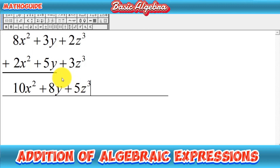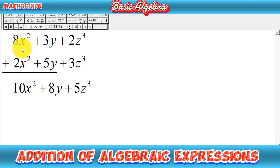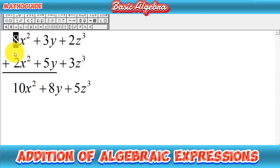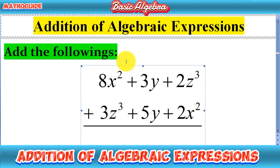First, write the expressions vertically if you want to use the vertical method. Then combine like terms in one column — that's how you can add them easily, because they have the same variable and same powers. After arranging into like-term form, check the sign and add or subtract only the coefficients. I hope this was helpful — thanks for watching.